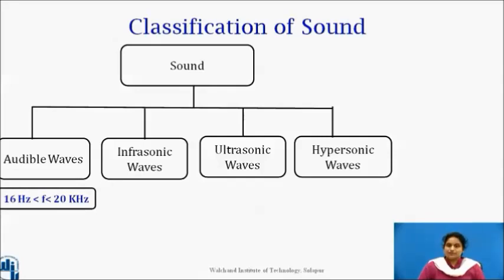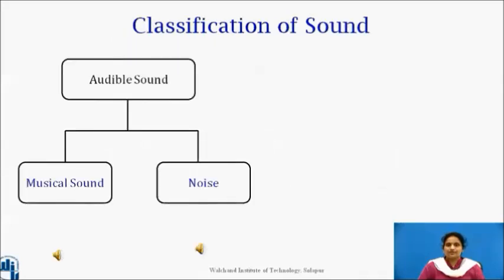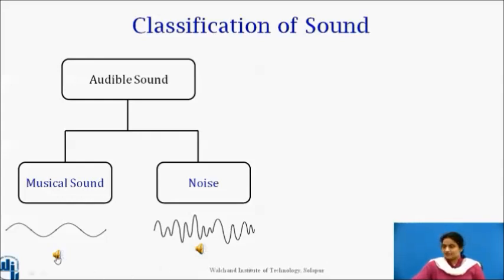Audible waves produce a sense of sound on a human ear and lie in the range of 16 Hz to 20 kHz. Infrasonic waves have frequencies below 16 Hz. Ultrasonic waves have frequencies above 20 kHz. Hypersonic waves have frequencies of 10^10 Hz and higher and correspond to thermal waves in liquids or solids. Audible sound waves can be further classified according to their frequency spectrum as musical sound and noise. Musical sounds produce a pleasing sensation on the ear, while noise causes irritation and strain to our ears.